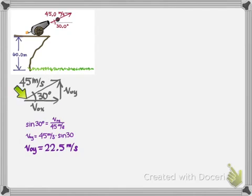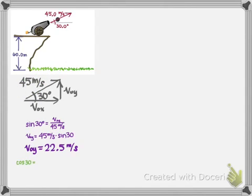We also want the initial velocity in the x direction. Using the cosine of 30 degrees, the cosine of 30 equals the adjacent side, which is v₀x, divided by the hypotenuse of 45 meters per second. Multiply both sides by 45, and the initial velocity in x is 45 times the cosine of 30, which gives you 39 meters per second.